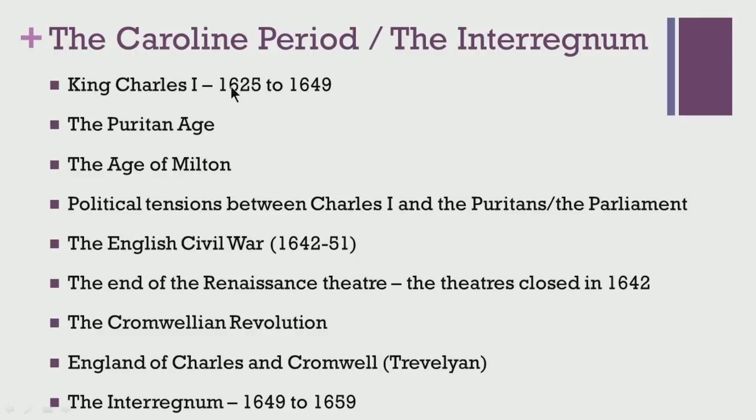Hello everyone, welcome to today's session of the course: The History of English Language and Literature. Today's lecture is titled 'The Carolinian Period, or the Age of Milton and the Interregnum.' We begin to see the last leg of the English Renaissance in this lecture, and we note that more than literary and non-literary events, it is the political and religious events that dominate this period. It is important to take a look at the socio-economic and political background as well.